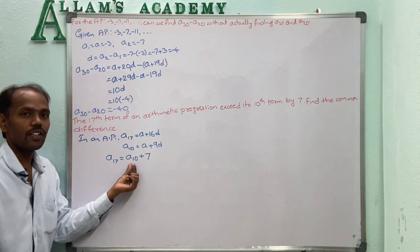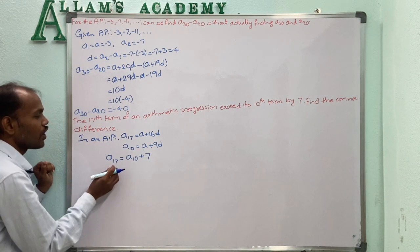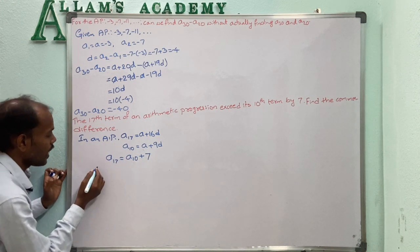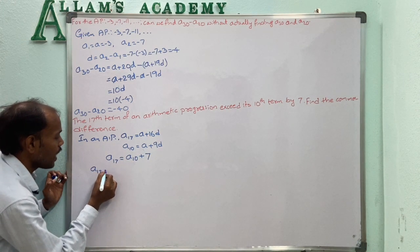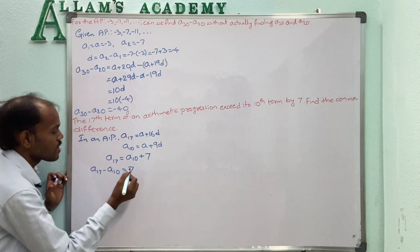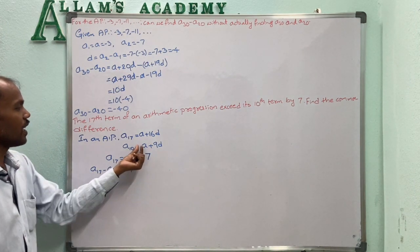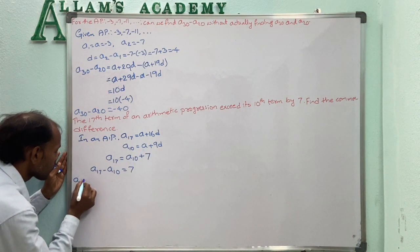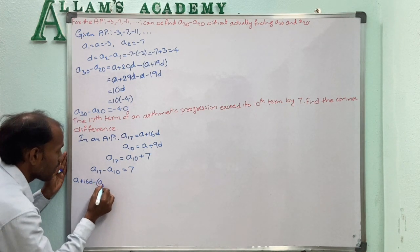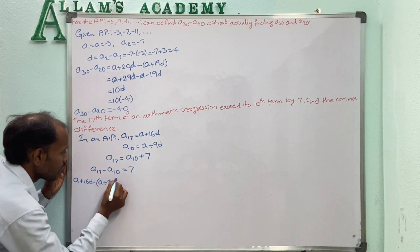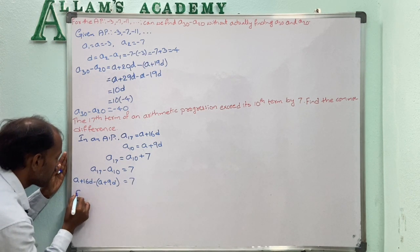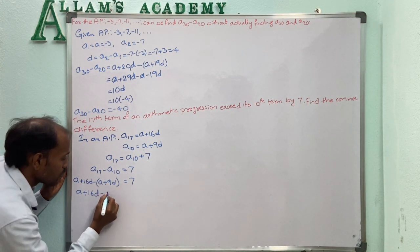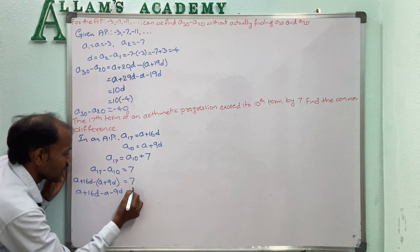The 17th term equals the 10th term plus 7. Transferring A10 to the other side: A17 minus A10 equals 7. Substituting the general forms: A + 16D minus (A + 9D) equals 7. Expanding: A + 16D minus A minus 9D equals 7.